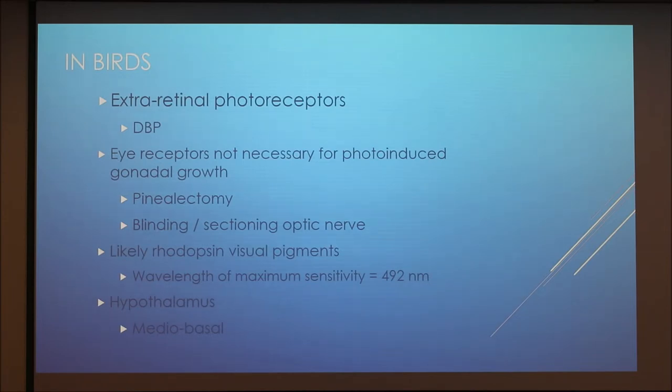Another result from these studies was an action spectrum for the sensitivity of the photopigment. The results support the belief that it is likely a rhodopsin visual pigment because its wavelength of maximum sensitivity is 492 nanometers. These photoreceptors are believed to be located in the mediobasal hypothalamus.